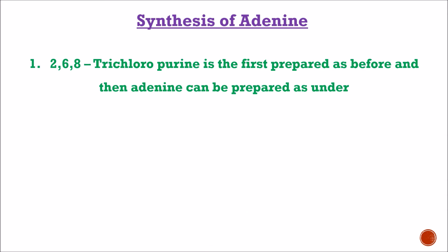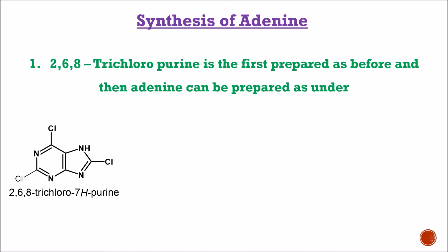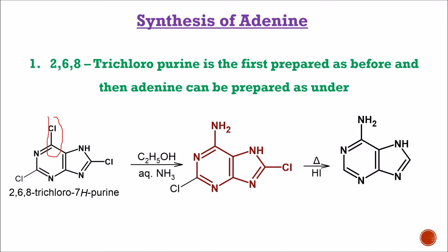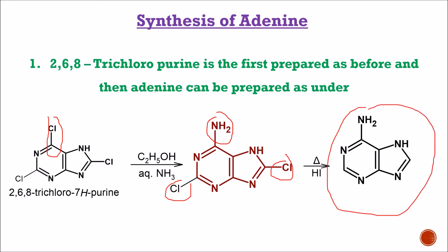Now let us start with the synthesis of adenine. As seen earlier, adenine is a derivative of purine — it is 6-aminopurine. The first method starts with 2,6,8-trichloropurine, where chloride groups are present at positions 2, 6, and 8. The first step is to convert the chloride at the sixth position to an amino group in the presence of C2H5OH and aqueous ammonia, so the sixth position chloride is converted into an NH2 group. After heating in the presence of HI, both remaining chloride groups at positions 2 and 8 are converted into hydrogen groups, forming 6-aminopurine, which is adenine.